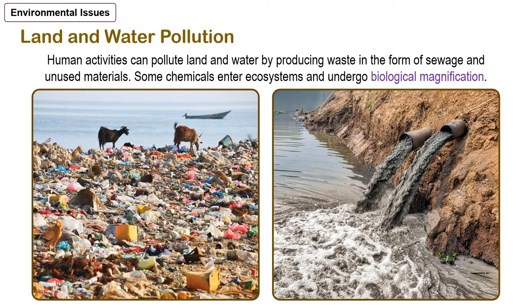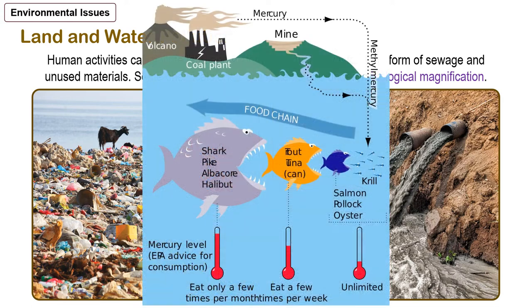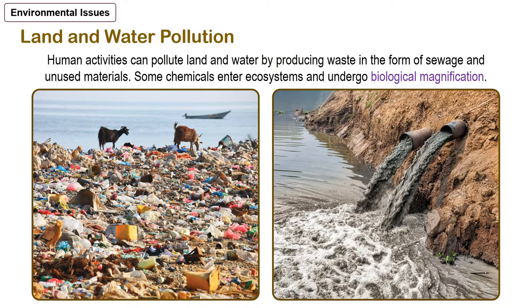Human activities can also pollute land and water by producing waste in the form of sewage and unused materials. Some chemicals enter ecosystems and undergo biological magnification. That big fat fish or meat on the dining table — I assure you, it also has the biggest content share in terms of pollutants like heavy metals, microplastics, and pathogens. These pictures also speak what's on your minds. We are all fully aware of this, but how are we going to find solutions?